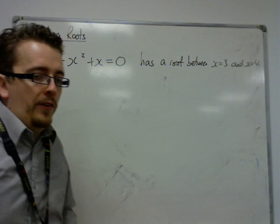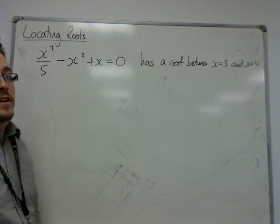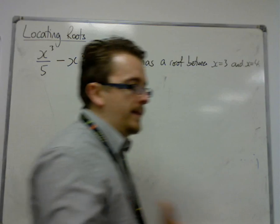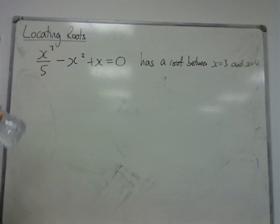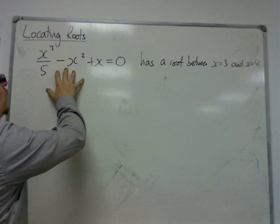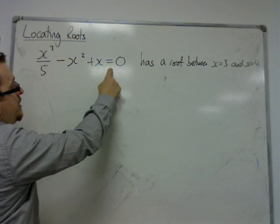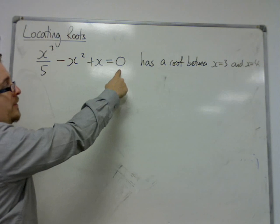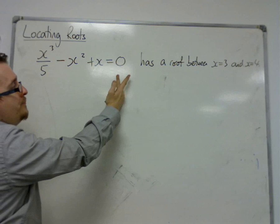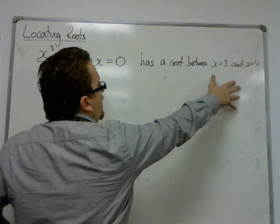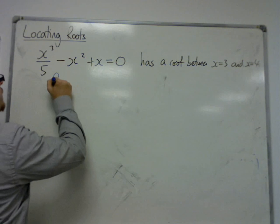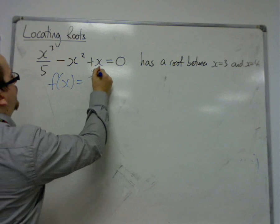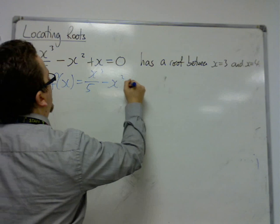Let's say we've got an equation that looks like x cubed over 5 minus x squared plus x equals 0. And we want to show that it has a root between x equals 3 and x equals 4. We've chosen here a cubic equation. I know we could potentially solve this equation algebraically, but that doesn't matter at this point for this example.